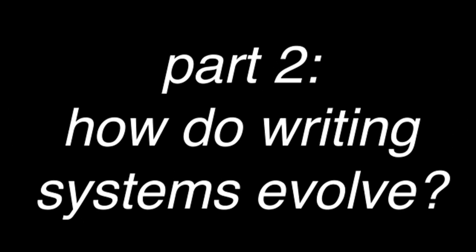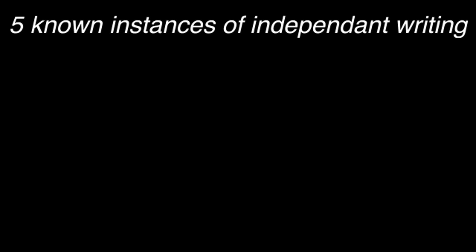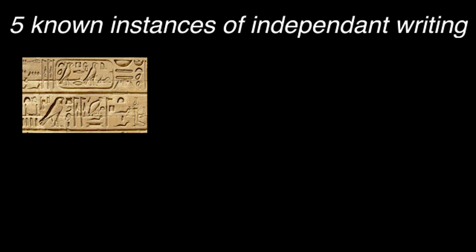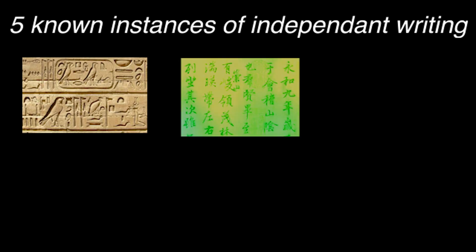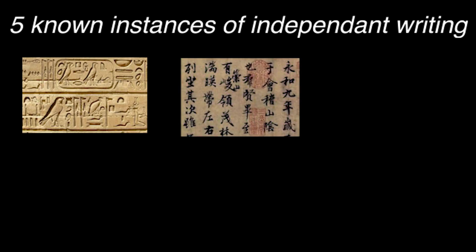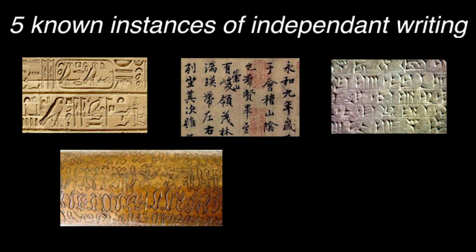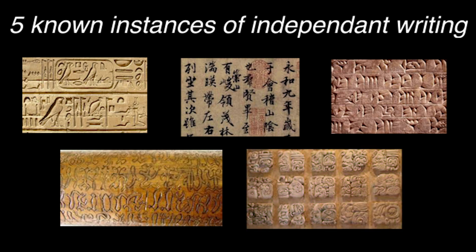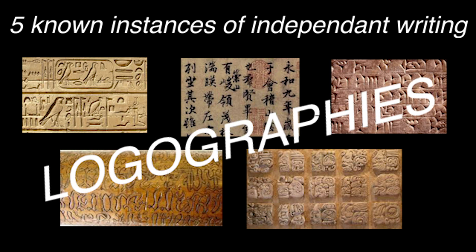There are five known instances of independent writing discovered across the world: ancient Egyptian hieroglyphs, Chinese calligraphy, Easter Island Rongorongo, Sumerian cuneiform, and the Mayan script. All of these were logographies. Nowadays most writing systems aren't logographies, so how does a logography evolve into a different type?